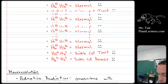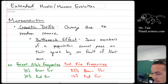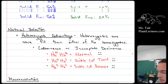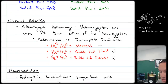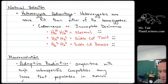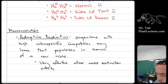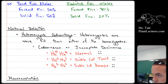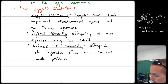When we talked about extended evolution, we talked about all the different types of genetic drift: the bottleneck effect, the founder effect, and general genetic drift, and also gene flow. Then we talked about the weird stuff like heterozygote advantage versus dominant diseases.